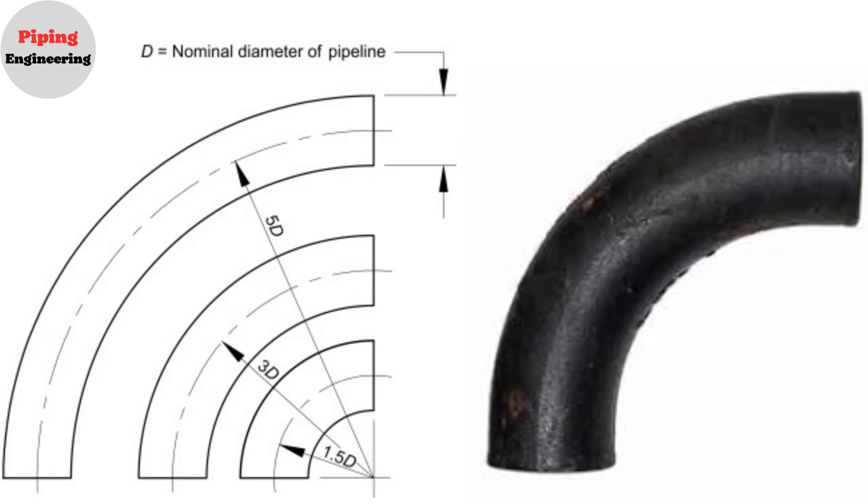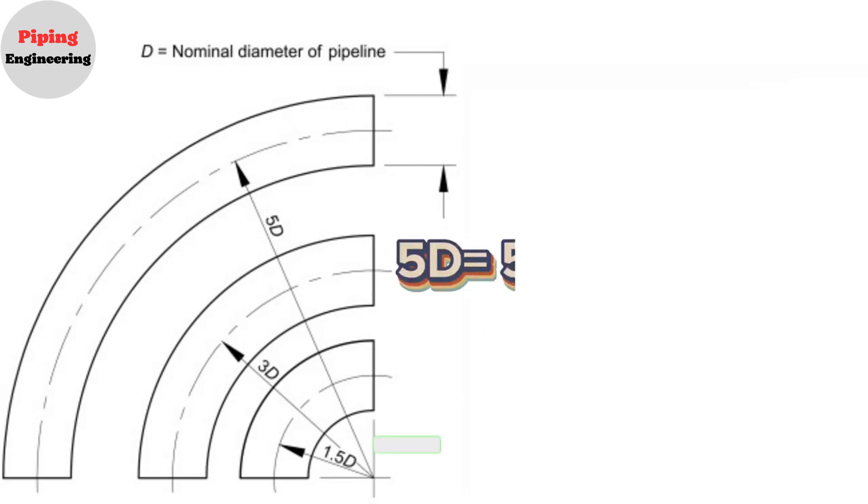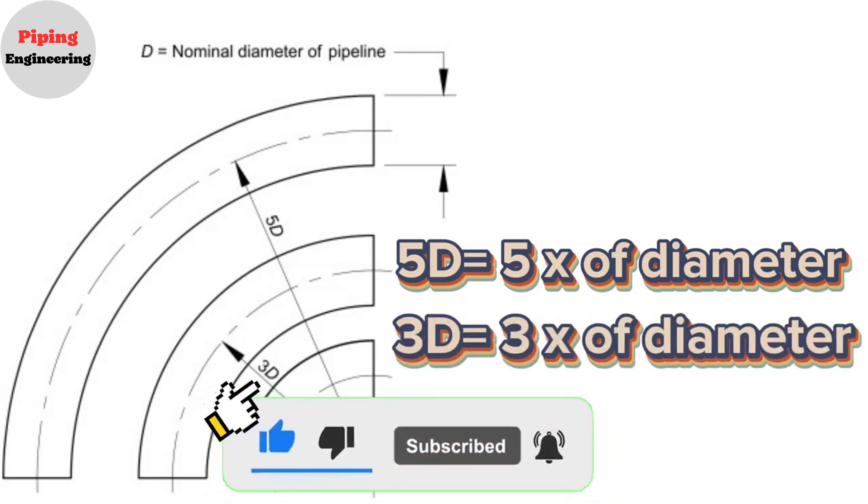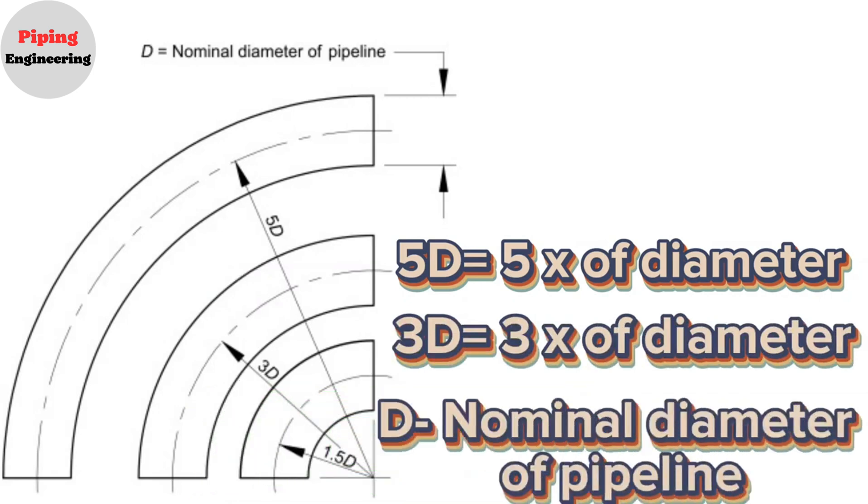Common bending radius are 3 and 5 times the pipe size. 5D equals 5 times of the diameter. 3D equals 3 times of the diameter. Here, D is the nominal diameter of pipeline.